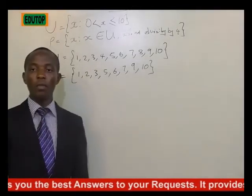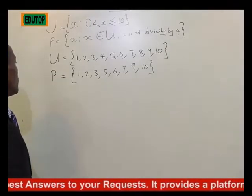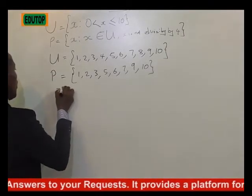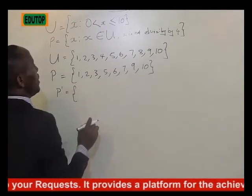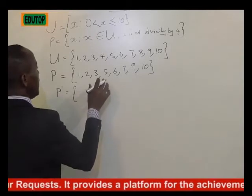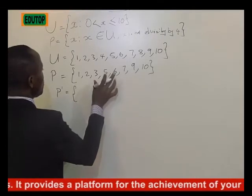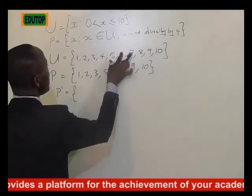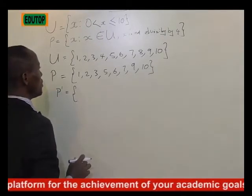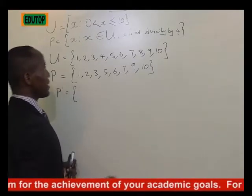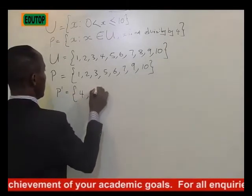We need to find the complement of P. P complement means the elements in U but not in P. The logic is simply that the elements divisible by 4 are 4 and 8.